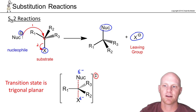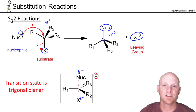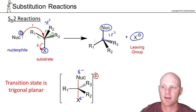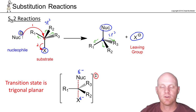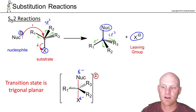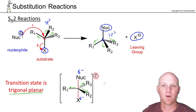The electrophilic carbon is sp3 hybridized and tetrahedral on both the reactant and product sides. However, during backside attack, groups R1, R2, and R3 flip — like an umbrella turning inside out. For one brief moment in the transition state, the carbon is trigonal planar, with those three groups pointing 120 degrees apart.